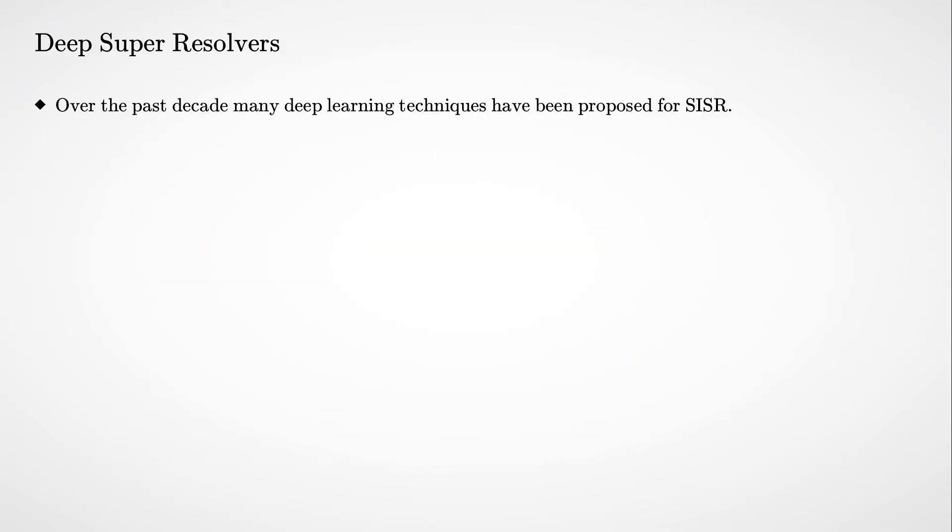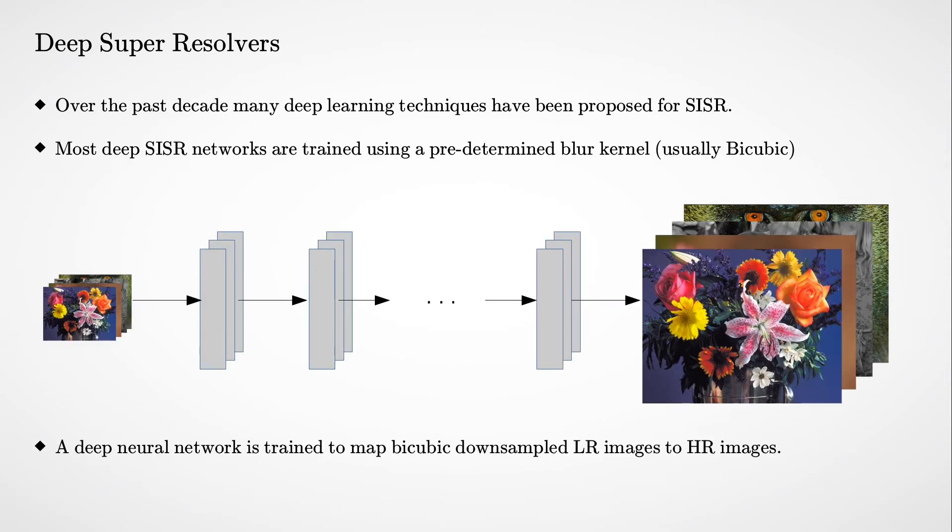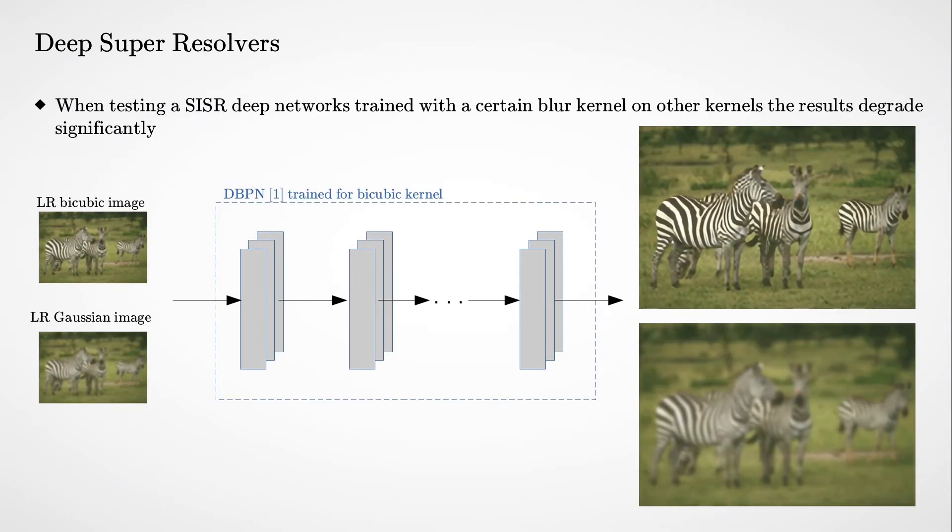Over the past decade, many deep learning approaches have been proposed for solving such an inverse problem. They usually take an image downsampled with the bicubic kernel, then train the neural network to map it to the high resolution version. Because deep neural networks are often trained using a single blur kernel, their performance degrades significantly when examined on other kernels, as can be seen from the following example.